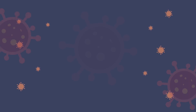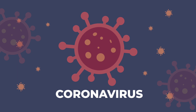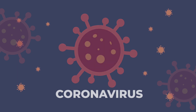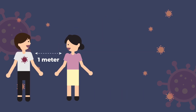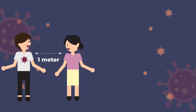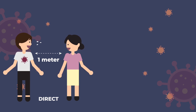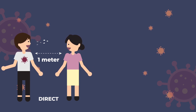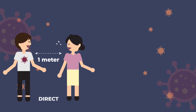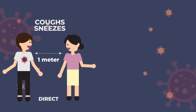COVID-19 is an infectious disease caused by a new strain of coronavirus called SARS-CoV-2. People can catch COVID-19 from others who have the virus. The disease spreads primarily from direct contact between persons through small droplets from the nose or mouth, which are expelled when a person with COVID-19 coughs, sneezes, or talks.